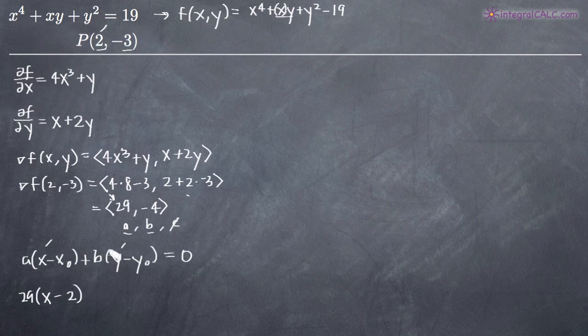plus b. Well, b is a negative 4, so we're actually going to get minus 4 times y minus y sub zero. Since we have a negative 3 for y sub zero and we have this negative sign here, we've got a double negative, so we're going to end up with y plus 3 and then that's all going to be equal to zero.